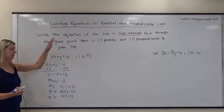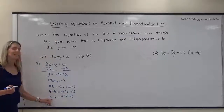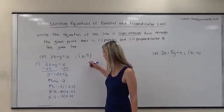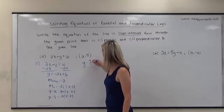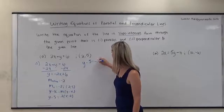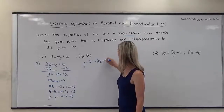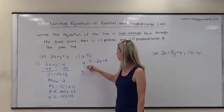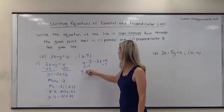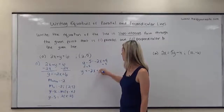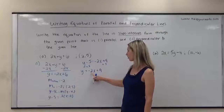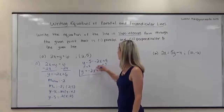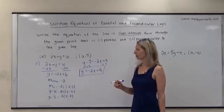Because the problem specifies slope-intercept form, I need to distribute the negative 2 and get y by itself. Distributing: y minus 5 equals negative 2x plus 4 (since negative 2 times negative 2 is positive 4). Adding 5 to both sides gives y equals negative 2x plus 9. Notice the slope is still negative 2, which it should be, matching the given slope. This is the equation of the line parallel to 2x plus y equals 6.